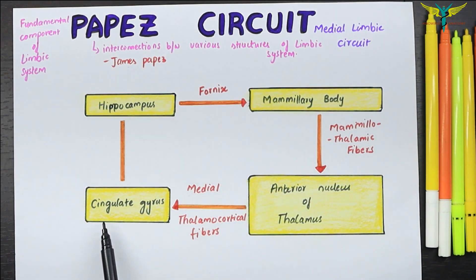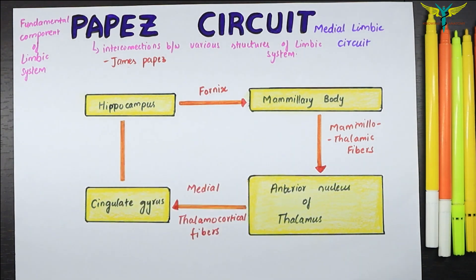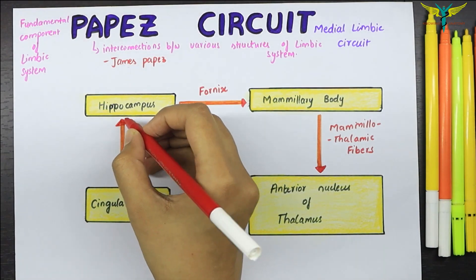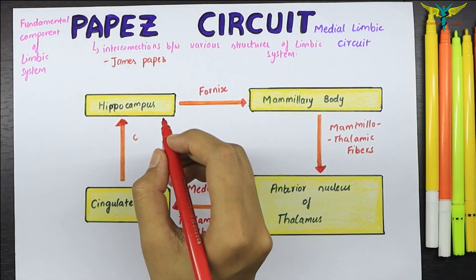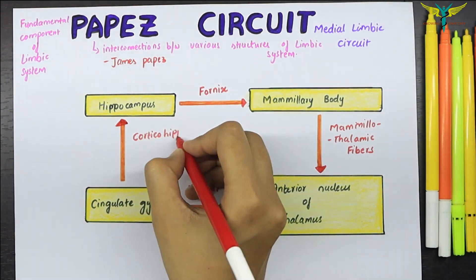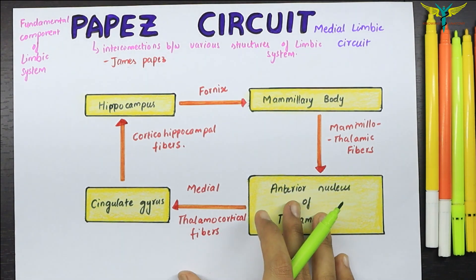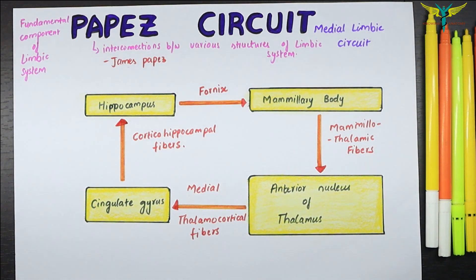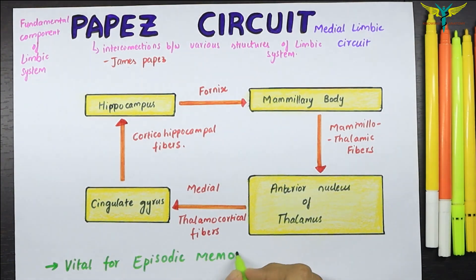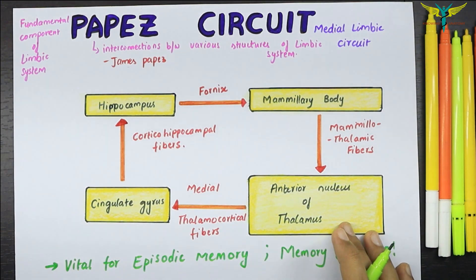The cingulate gyrus in turn is connected back to the hippocampus by the corticohippocampal fibers — which is the start and end point of this circuit — thus completing the Papez circuit. The main role of the Papez circuit is that it is vital for episodic memory; that is, it plays a role in the memory encoding of the brain.